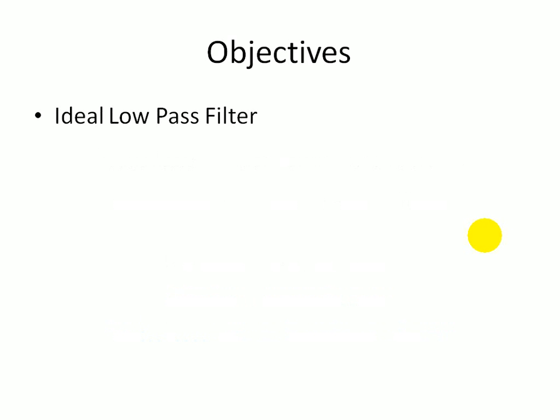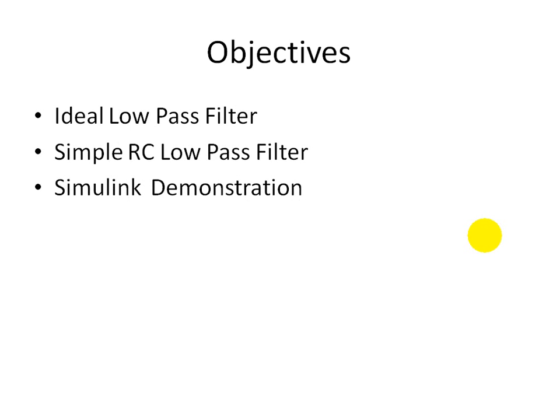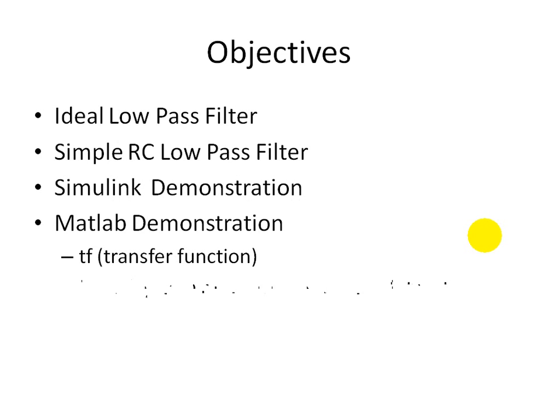The objectives of this presentation: I'll first explain what an ideal low-pass filter is, then a simple RC low-pass filter. From there, I'll do the demo first using Simulink, then MATLAB to demonstrate the transfer function command TF, as well as the Bode command to plot the system magnitude and phase plots as a function of either the frequency or the radian frequency.